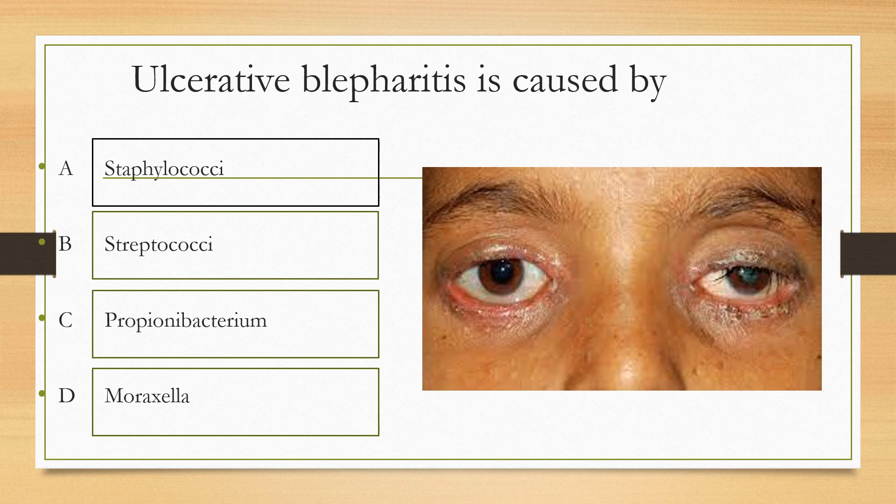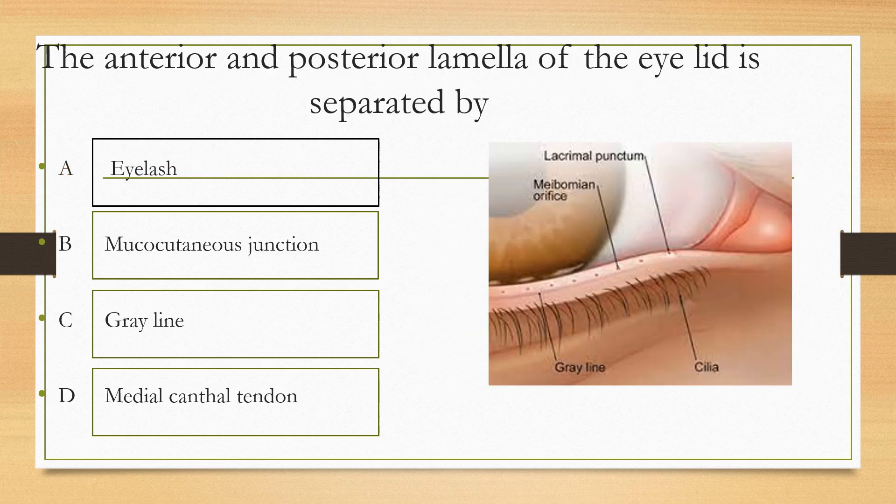Ulcerative blepharitis is caused by which of the following conditions? Options are: staphylococci, streptococci, propionibacteria, Moraxella. The answer is staphylococci.